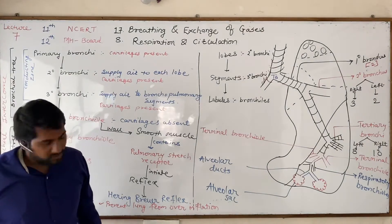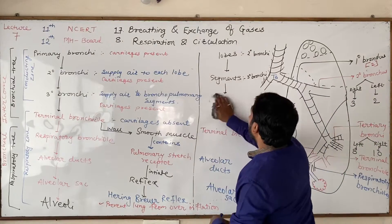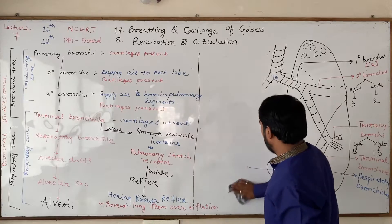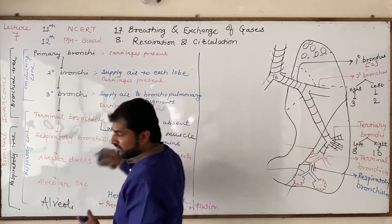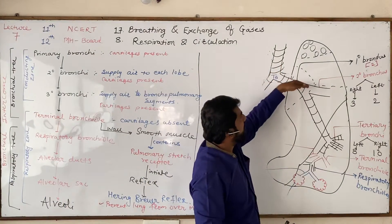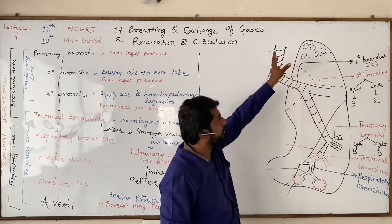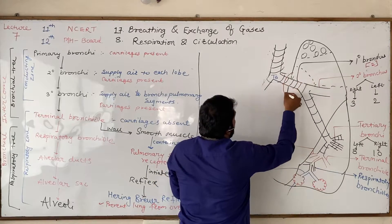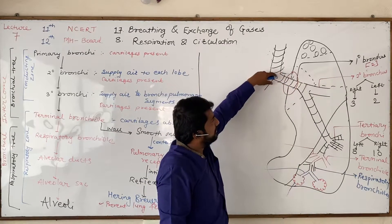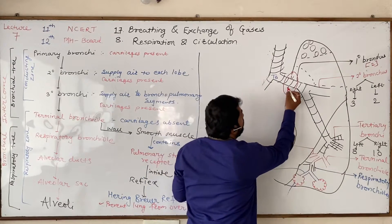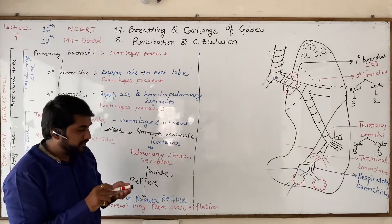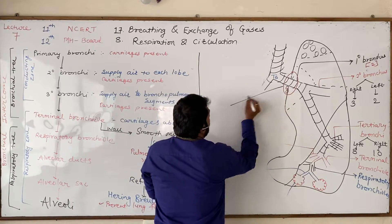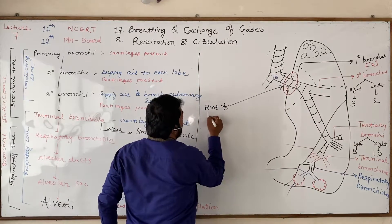The primary bronchi entering into the lung — along with blood vessels, lymphatic vessels, and nerves — enter through only one side of the lung. This site of entry is known as the root of the lung, also called the hilum of the lung, which provides entry for blood vessels, lymphatic vessels, and nerves into the lung.